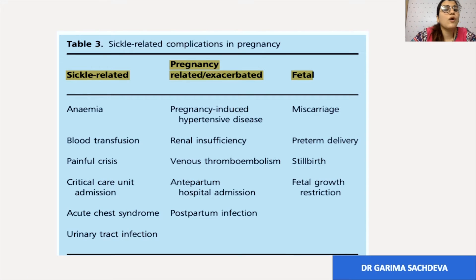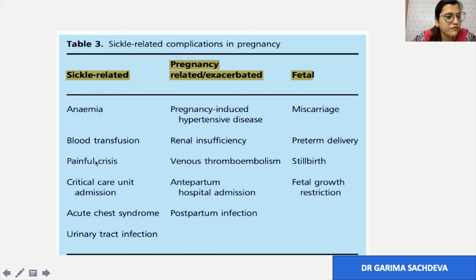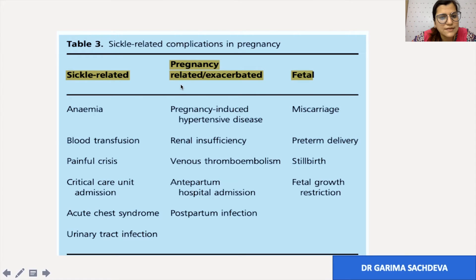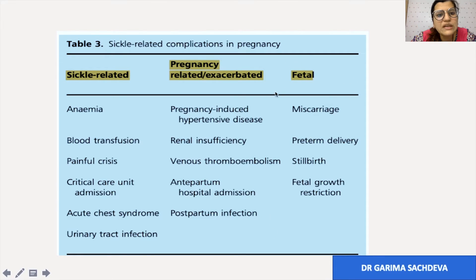Complications in pregnancy include those related to sickling such as anaemia requiring blood transfusion, painful crisis, ICU admission, acute chest syndrome, and UTI. Pregnancy-related or exacerbated complications include pregnancy-induced hypertensive disease, renal insufficiency, venous thromboembolism, antepartum hospital admission, and postpartum infection. Fetal complications include miscarriage, preterm delivery, stillbirth, and fetal growth restriction.